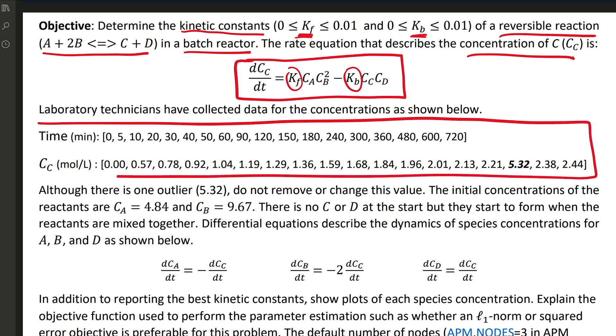Laboratory technicians have collected some data to help us estimate these Kf forward and K backward constants. Here we have our data collected at these times in minutes, and we can see in this data set we have our one outlier right here. And we could easily remove that.